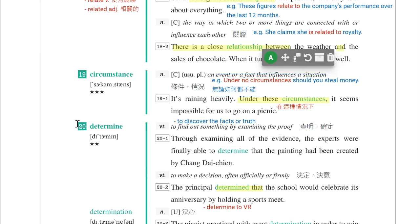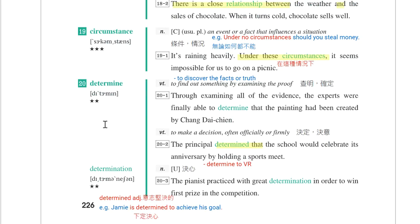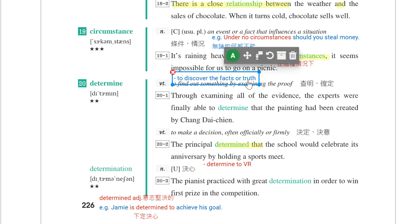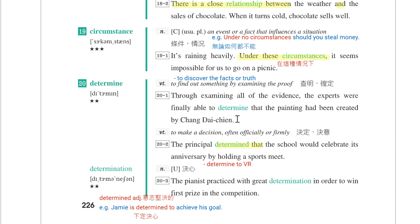第二十个单字是determine，有两个意思。第一个是查明，it means to discover the facts or truth。例句：Through examining all of the evidence, the experts were finally able to determine that the painting had been created by John Dachian。透过检查所有证据，专家最后终于查明这幅画的作者。